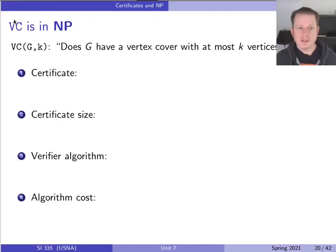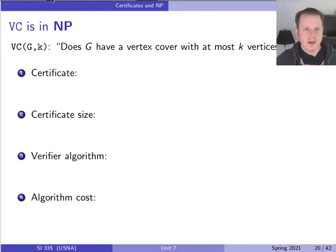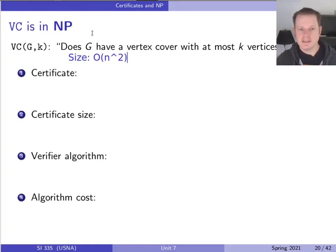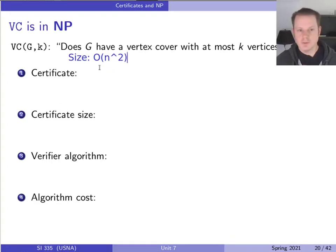So the vertex cover problem — here's the decision version of it: does G have a vertex cover with at most k vertices? First, as a reminder, the size of this problem is n squared, where n is the number of vertices, because that's the size of the graph. Notice that k, the second input, is definitely smaller than n. So the whole size of this is n squared, and that's what our target is — polynomial in n.